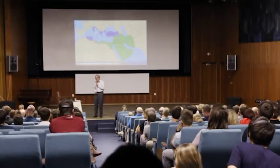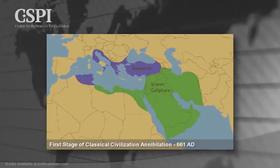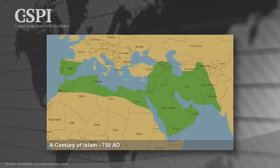On our next slide, we see what I call the first stage of classical annihilation. The Byzantine Empire is shrinking. Islam is pressed into what was called Persia in those days, and there's almost none of the classical left in North Africa. This is basically 100 years — a massive expansion. How did this happen so fast? This is like a collapse. Why did this happen?